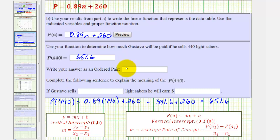As an ordered pair, this would be 440 comma 651.6. The meaning of this is that if Gustavo sells 440 lightsabers, he will earn 651 dollars and 60 cents. Notice the dollar sign is already included here.